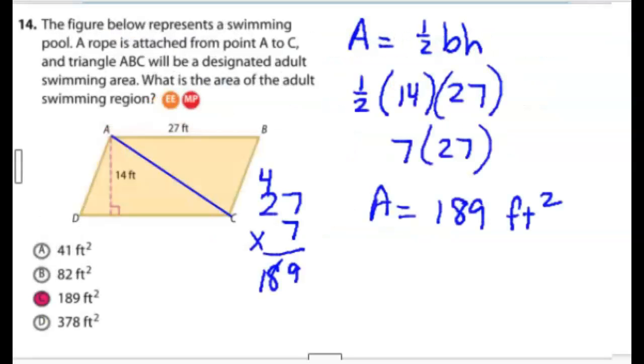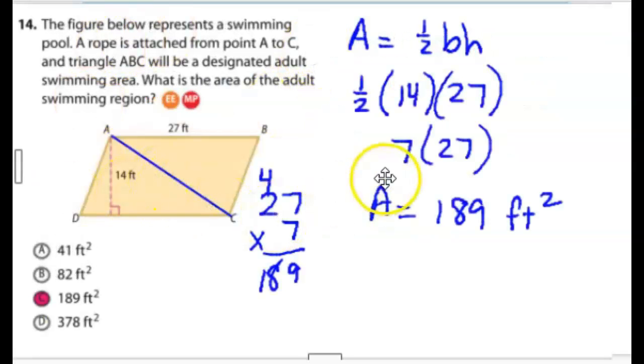Okay, now we're going to skip the interactive parts and just talk about the answers. Number 14, the figure below represents a swimming pool. The rope is attached from point A to point C, and you can actually see where I draw that line. And that creates two triangles, and then it asks you to find the area of one of those triangles. So I'm going to write down the formula for triangles, which is area equals one-half base times height.